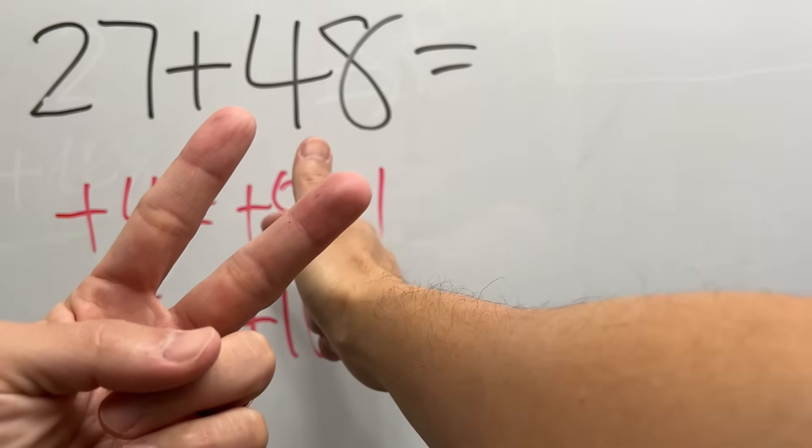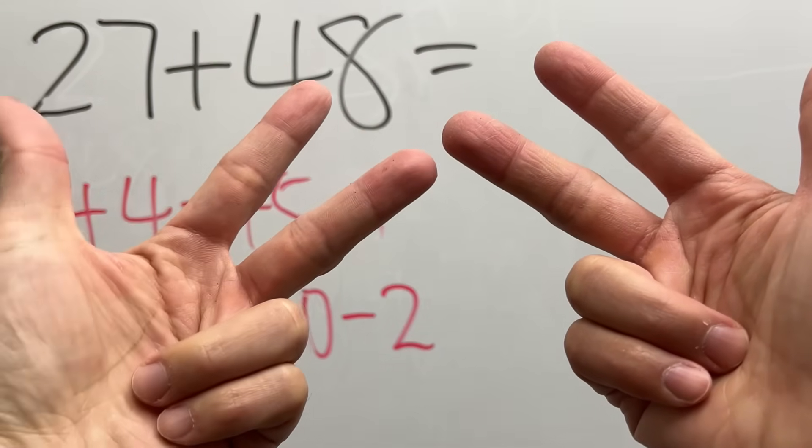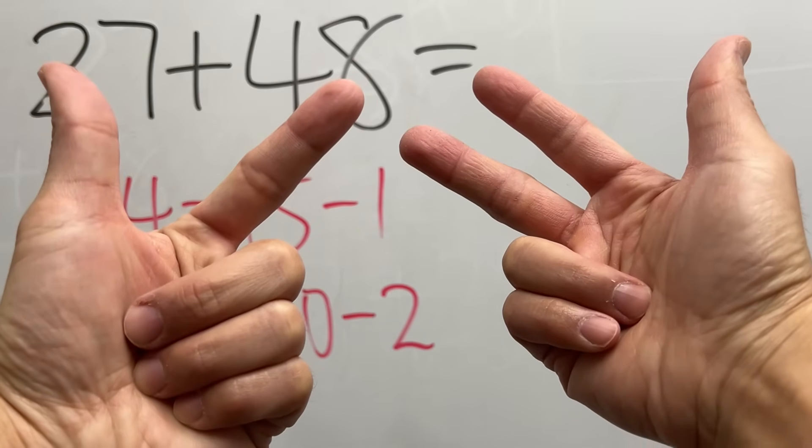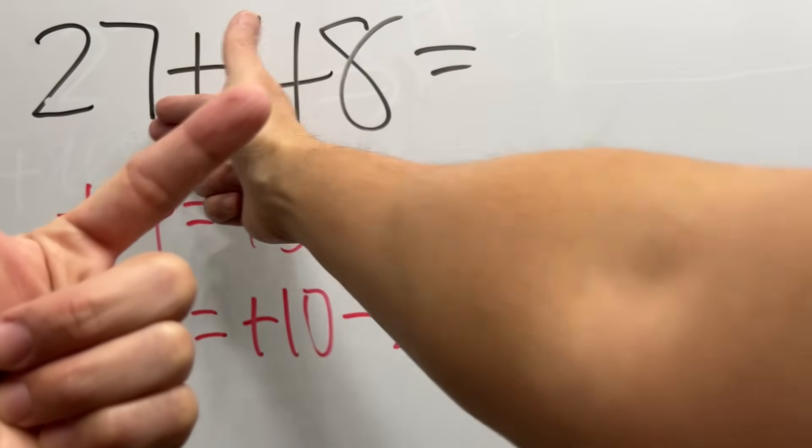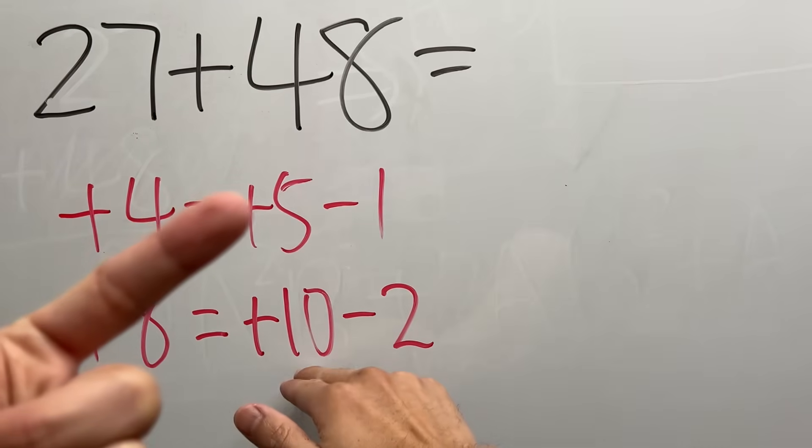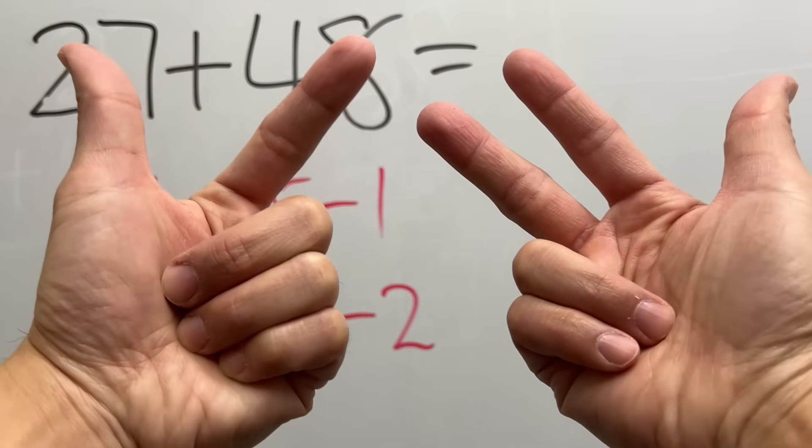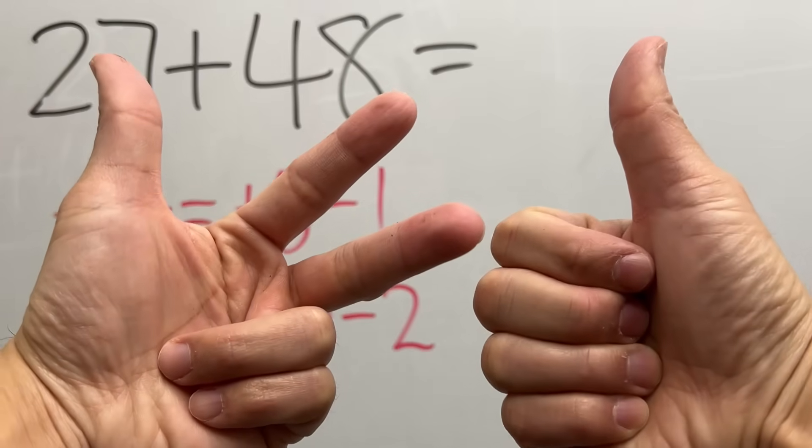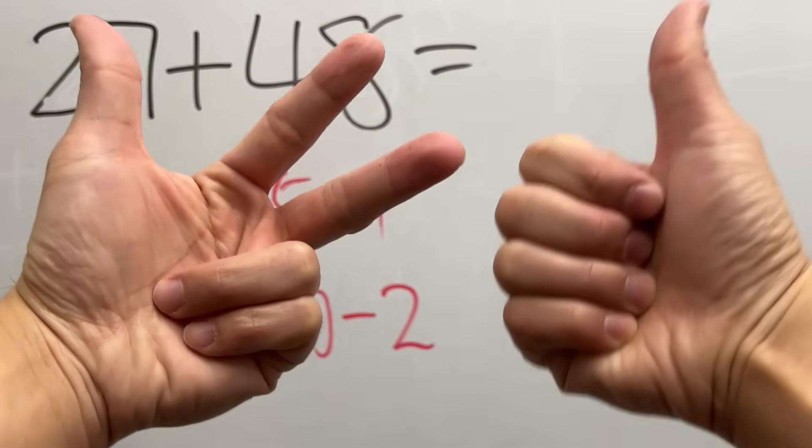Plus 48. The four is like five minus one, so plus the five on my left hand and then minus one. Now seven plus eight, eight is the same as plus ten minus two, so plus ten, this is the ten, and then minus two right here. So finally, the answer is 75.